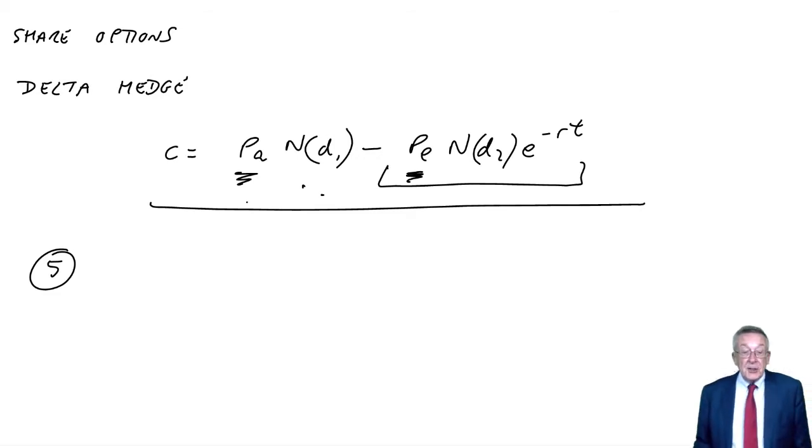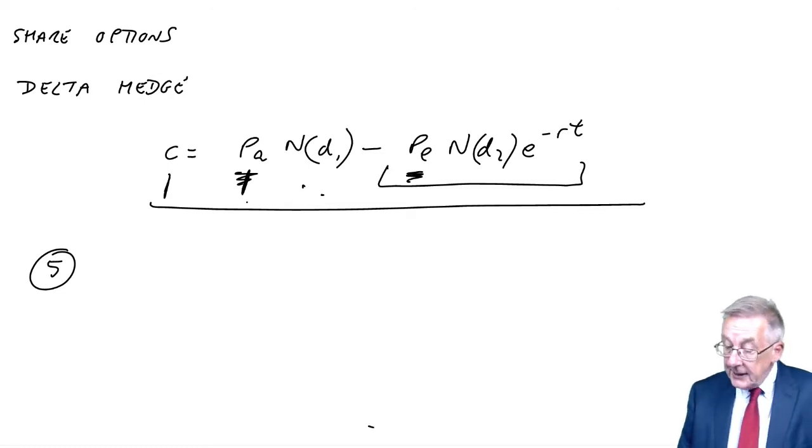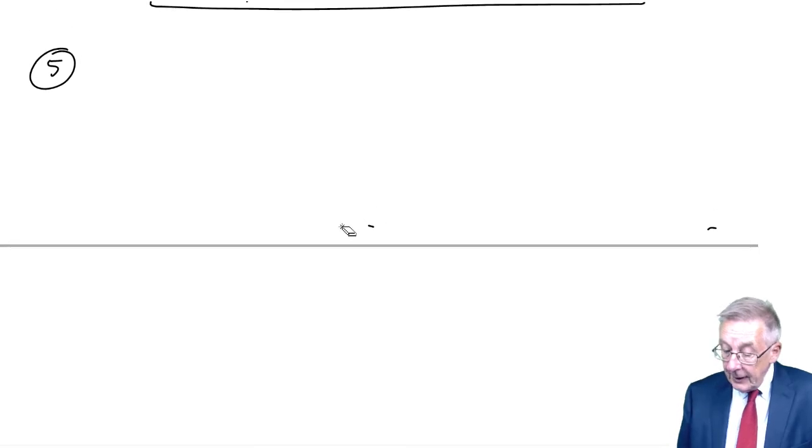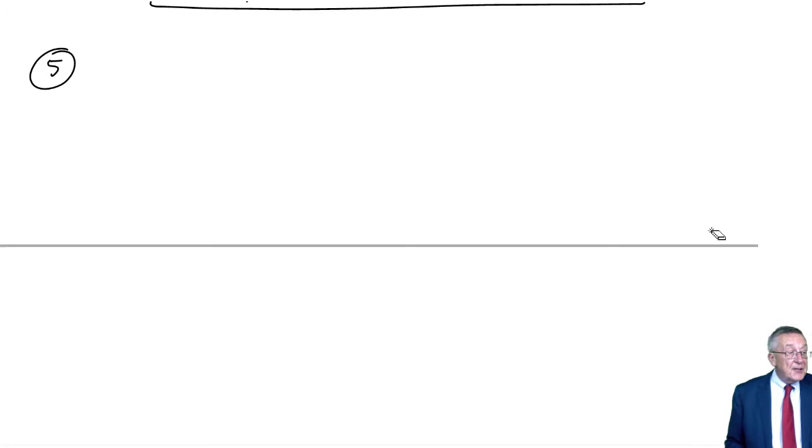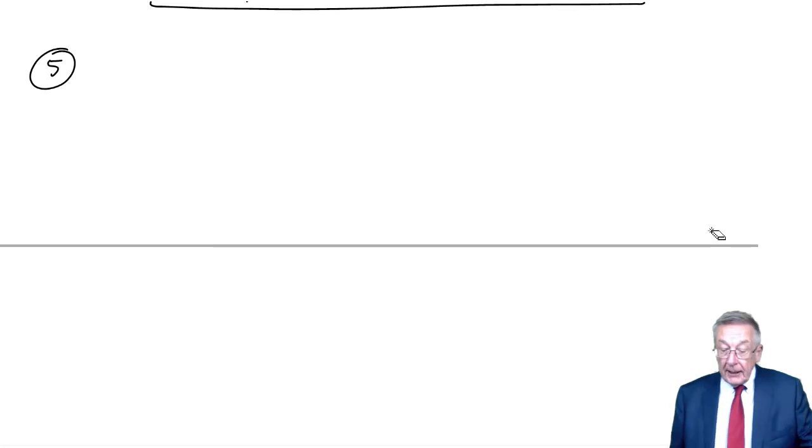The exercise price is $1.80, three months, the risk-free interest rate 10% per annum, the standard deviation of the return on the share is 40%. I'm not interested in calculating what the option premium is. What I am interested in is if share price fell by 10 cents, what would be the effect on option price? It would fall by 10 cents times N(D1). So let's calculate N(D1).